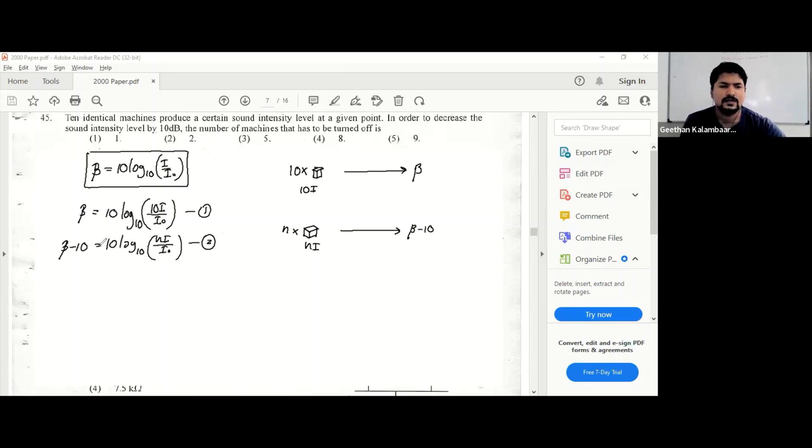We deduct one from two. So 10 equals 10 log - inside the log it's getting divided when you reduce - 10I over I₀ divided by nI over I₀, which gives us 10 over n. So 1 equals log base 10 of 10 over n. We can write this as 10 to the power of 1 equals 10 over n, so n equals 1. Wait, n equals 10, so we need nine machines.